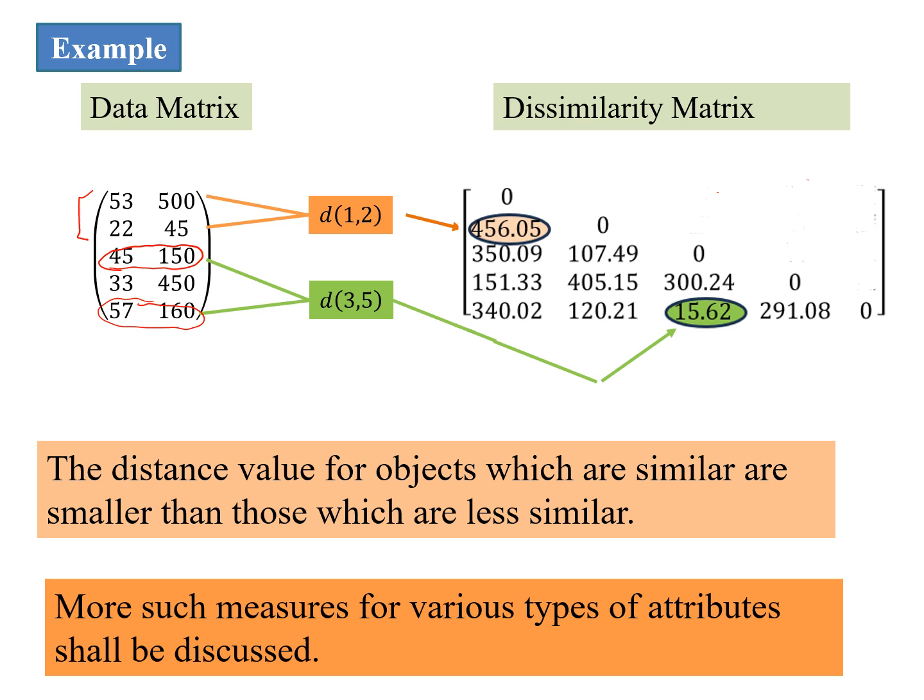This was an introduction to the data matrix, the dissimilarity matrix, proximity measures, and proximity measures for numeric attributes, along with a small example. We would need more proximity measures for different types of attributes which we will very shortly see in future. Thanks for watching. Thank you.